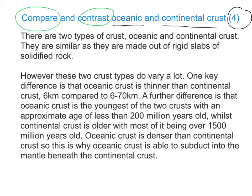In this second paragraph, connectives are used to give a like-for-like structure: 'compared to,' 'whilst,' and 'than.' This shows that within the same sentence we're comparing oceanic to continental and using the like-for-like structure.